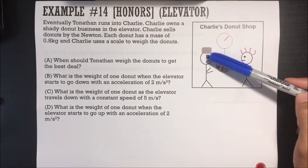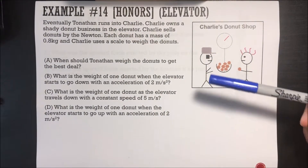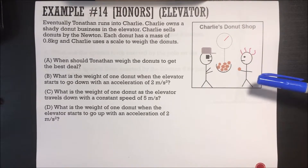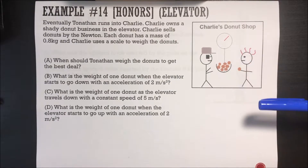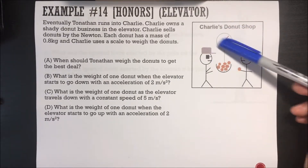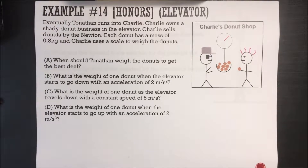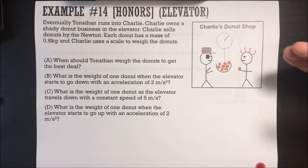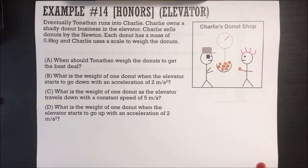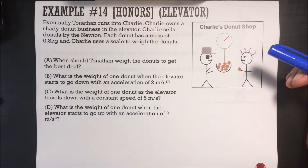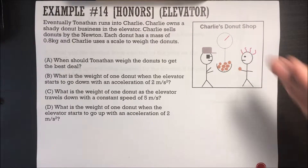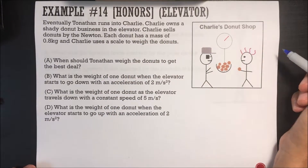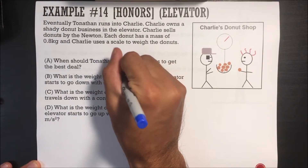Eventually Toniton runs into Charlie, who owns a shady donut business in the elevator. Charlie sells donuts by the Newton — each donut has a mass of 0.8 kilograms and Charlie uses a scale to weigh them. When should Toniton weigh the donuts to get the best deal? As we discussed, whenever the elevator is accelerating downwards, there's less contact with the scale, so it will read less than it should. To get the best deal, the elevator should be accelerating downwards.